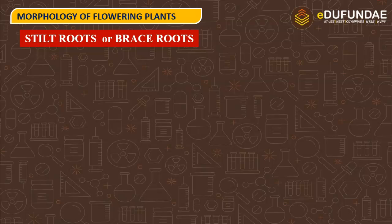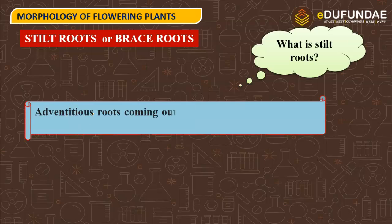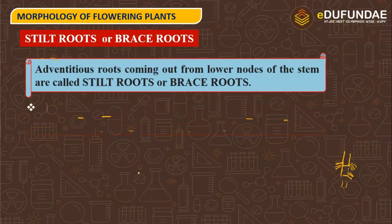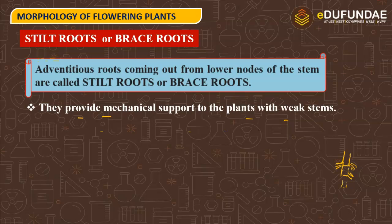Next are stilt roots and brace roots. Adventitious roots coming out from the lower nodes of the stem are called stilt roots and brace roots. In sugar cane, roots arise from the nodes of the stem. These are called stilt or brace roots — adventitious roots arising from the stem, coming out from the lower nodes.